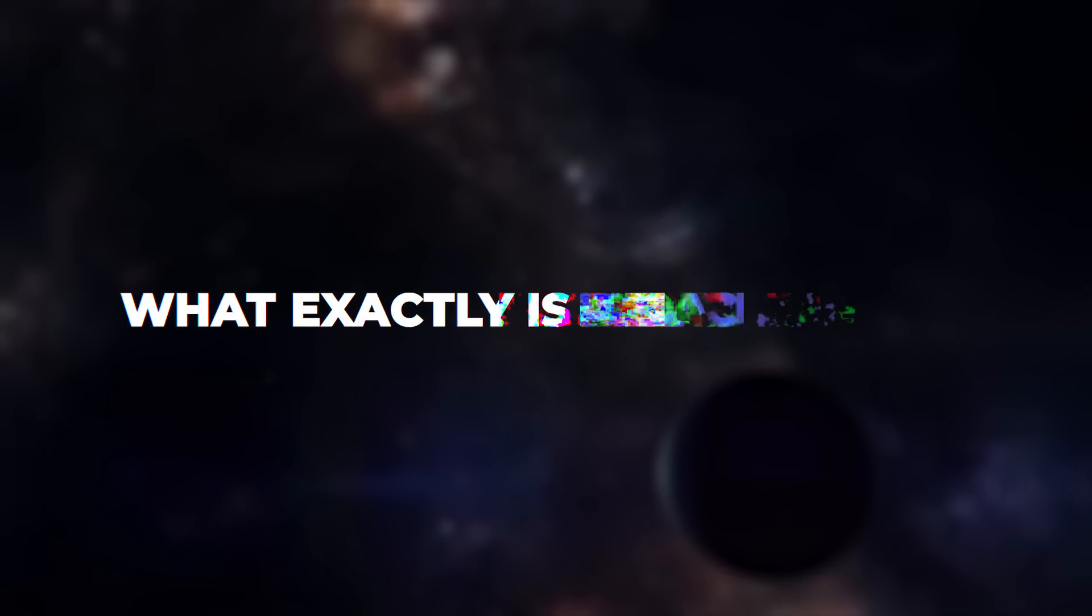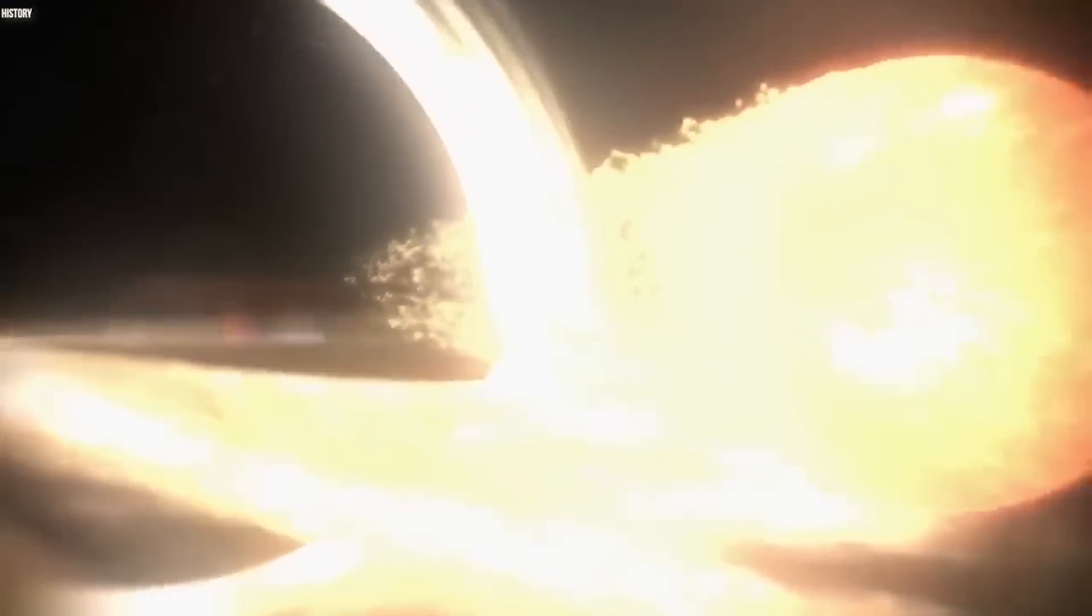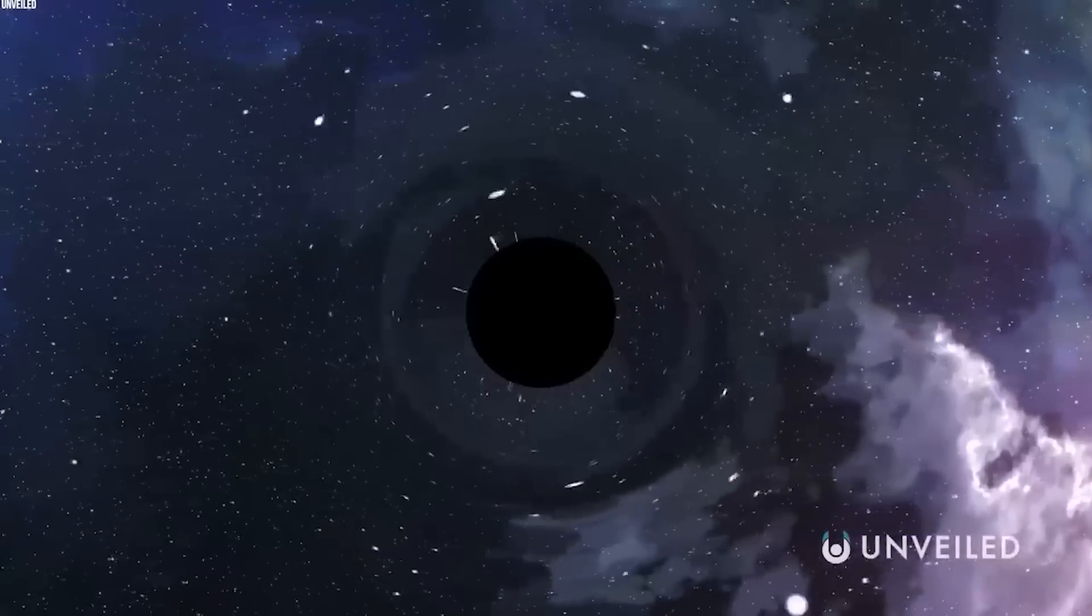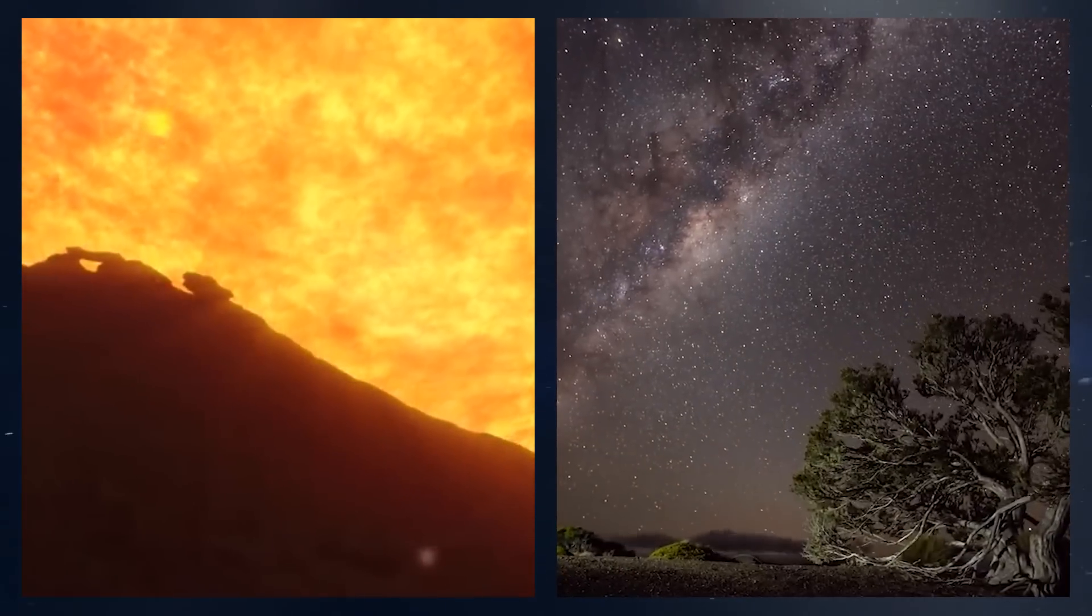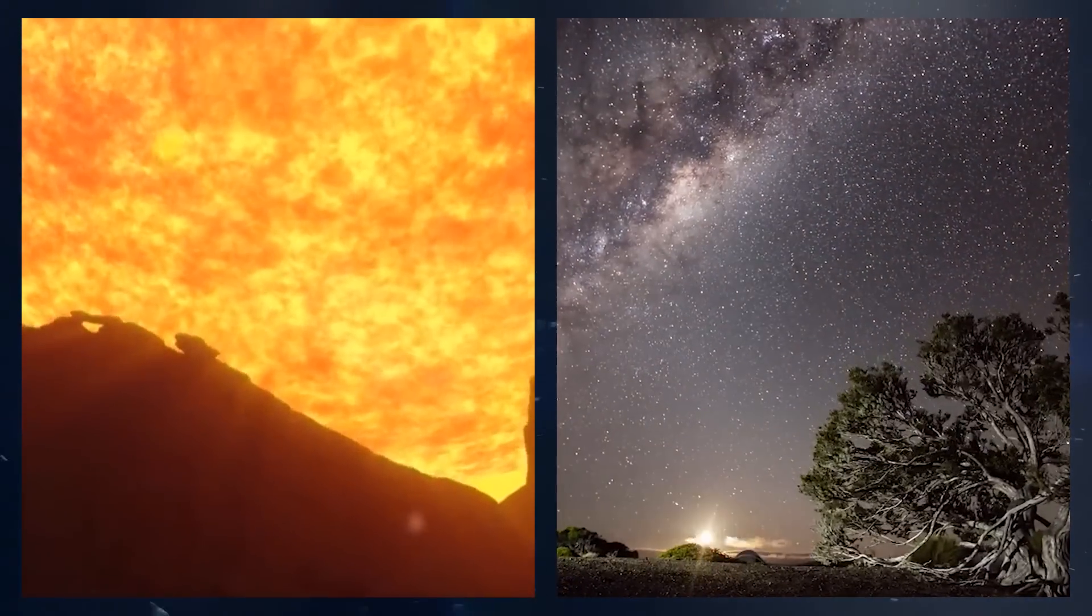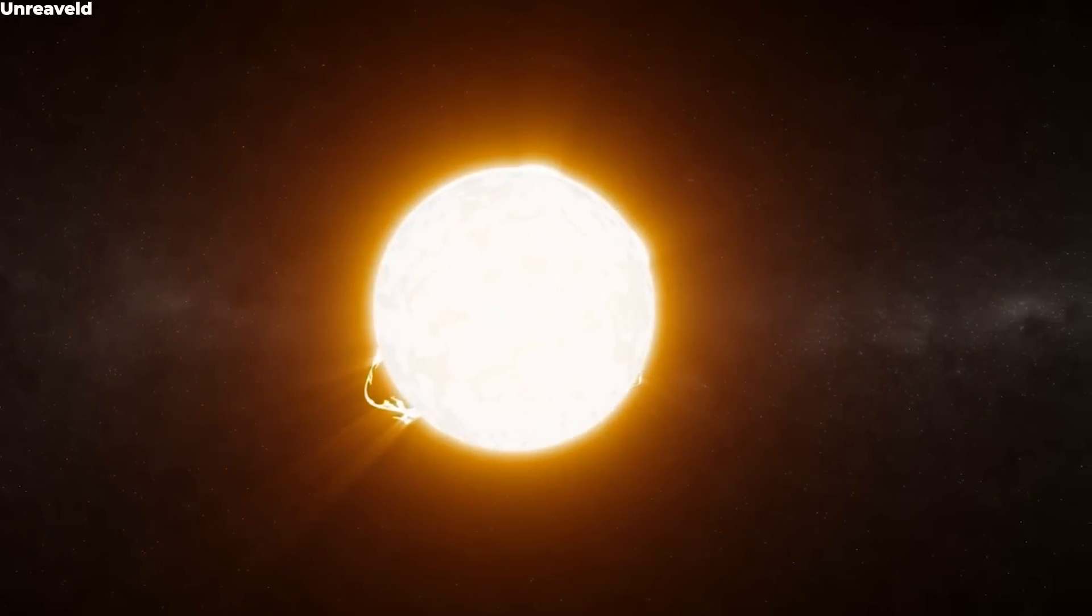What exactly is a black hole? Don't be fooled by the name. A black hole is anything but empty space. Instead, it's a large amount of matter compressed into a tiny space. Imagine a star ten times the mass of the Sun crammed into a sphere the size of New York City. As a result, nothing, not even light, can escape the gravitational field.